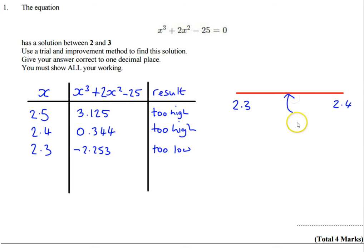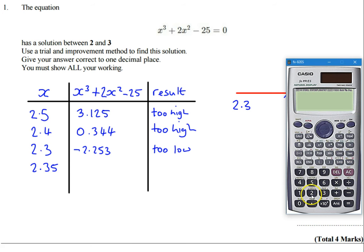To find out which is my answer I'm going to try halfway in between 2.3 and 2.4 which is 2.35, so that's going to be my next trial. So let's do 2.35³ + 2 × 2.35² - 25.